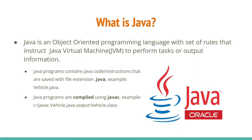Java programs are compiled using the javac command. For example: javac vehicle.java. The keywords here are compilation and javac — just remember these two things for this slide.